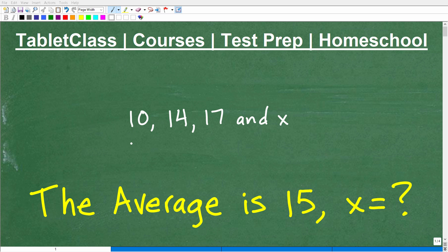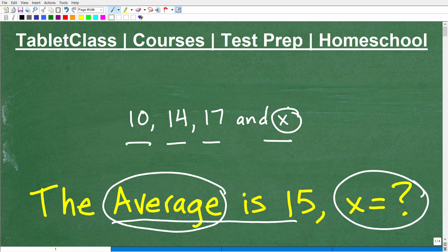Okay, so what do we got here? Well, we have the numbers 10, 14, 17, and some number x, but we know that the average of these numbers is 15, and we'd like to know what x is equal to. So this is going to combine a lot of fun stuff for us in mathematics. We get to deal with the average, and we're going to have to use some algebra to actually solve for this mystery number.